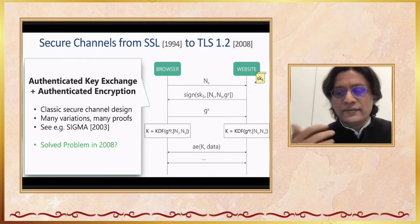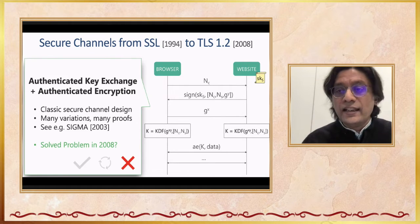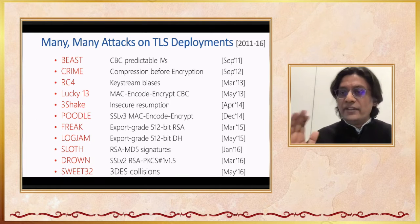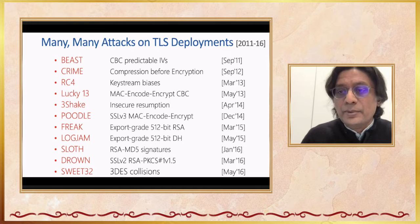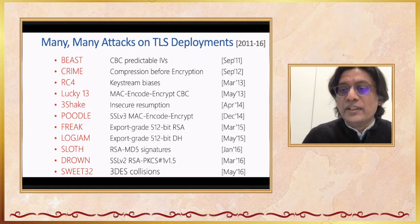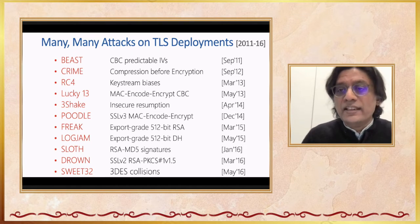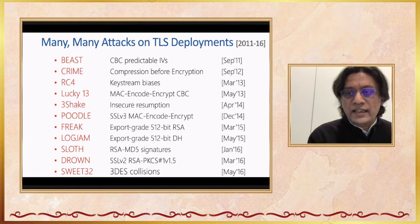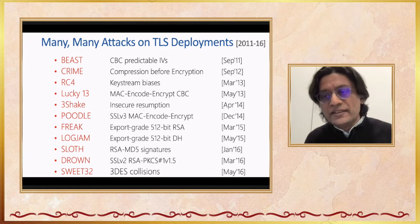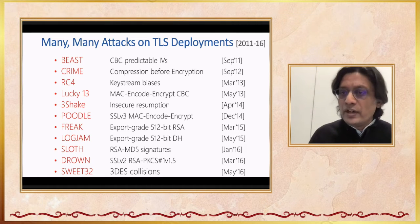Between 2011 and 2016, this is a subset of the attacks with names, logos, and high-profile news articles that were made on TLS deployments. So there was this beautiful high-level protocol with many security proofs, and then there are these deployments with these bazillion attacks. What is the gap between the theoretical protocol and the realistic deployment that is giving rise to all these attacks?